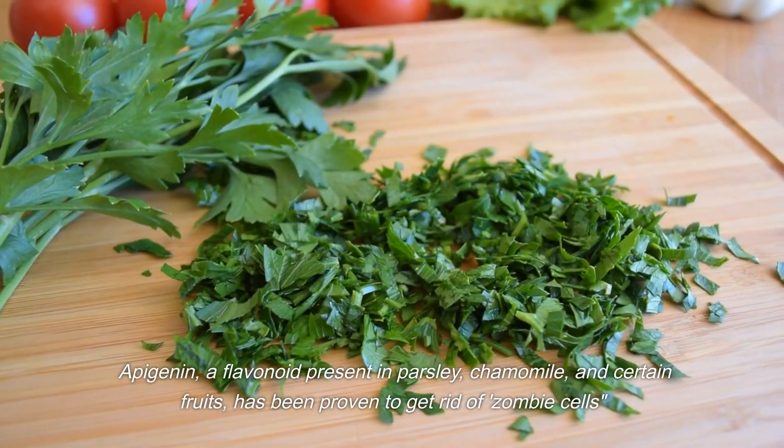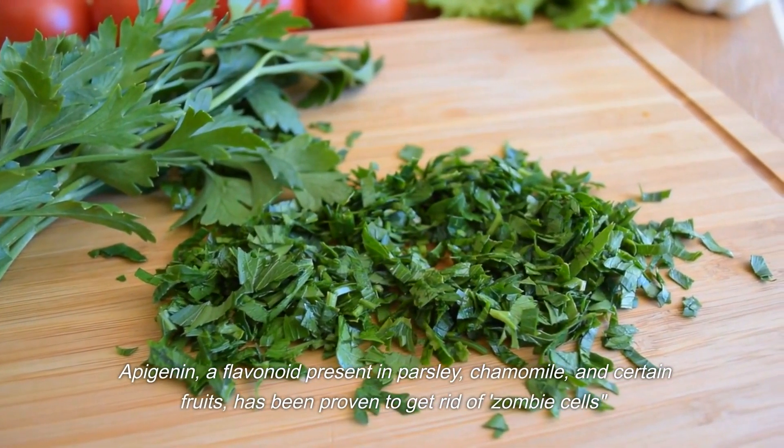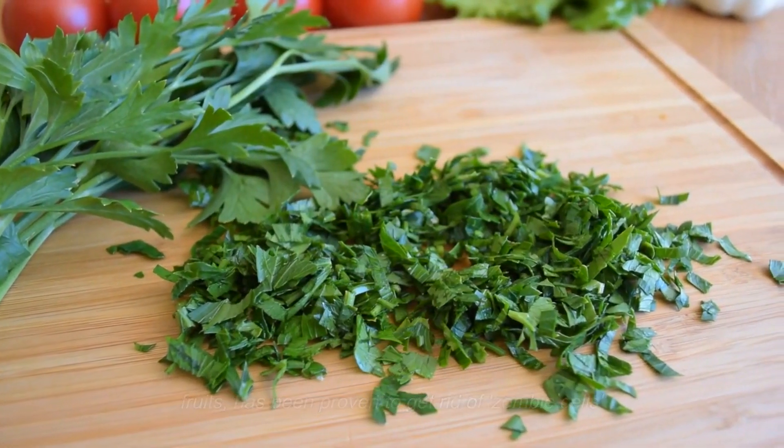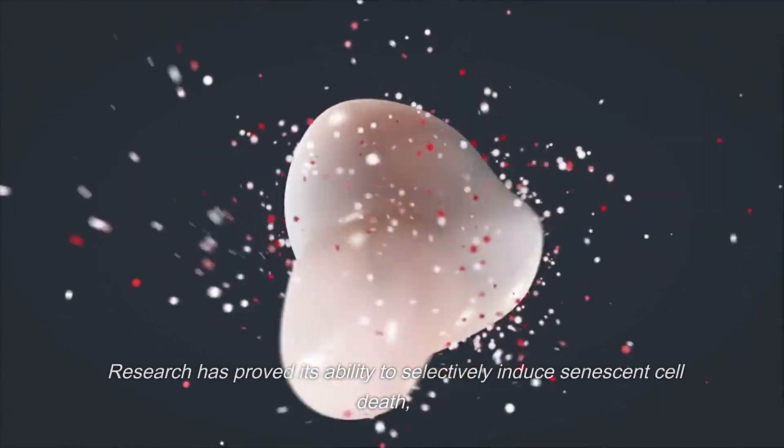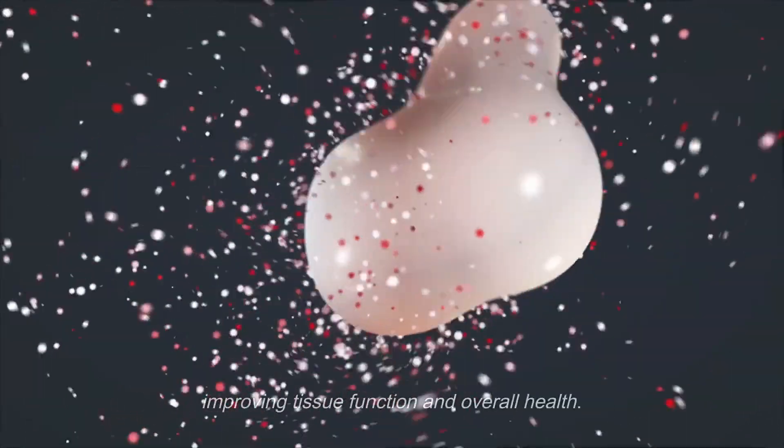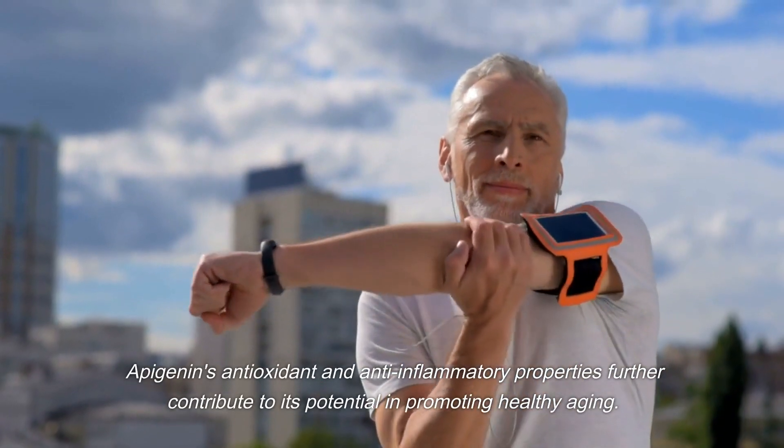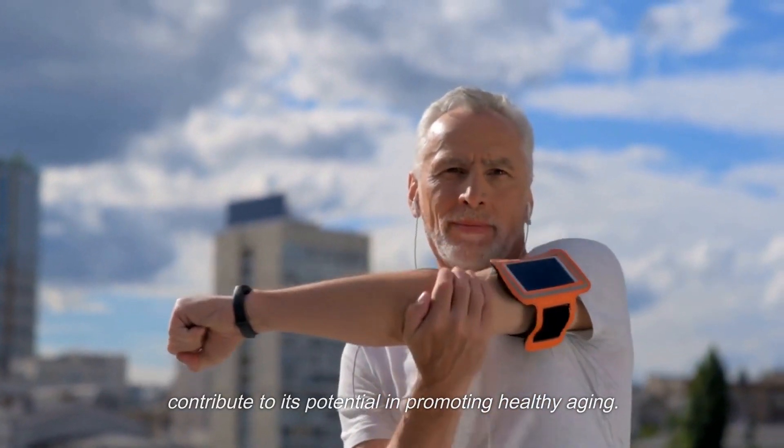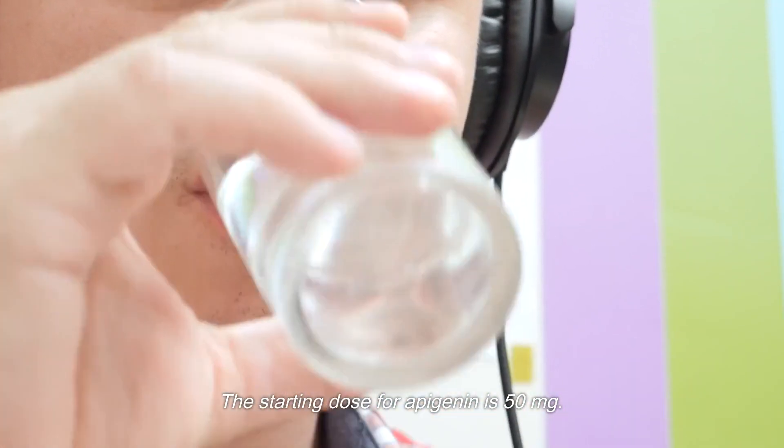Apigenin, a flavonoid present in parsley, chamomile, and certain fruits, has been proven to get rid of zombie cells. Research has proved its ability to selectively induce senescent cell death, improving tissue function and overall health. Apigenin's antioxidant and anti-inflammatory properties further contribute to its potential in promoting healthy aging. The starting dose for apigenin is 50 mg.